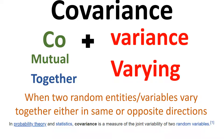Wikipedia says: in probability theory and statistics, covariance is a measure of the joint variability of two random variables. In short, covariance is used to find the relationship between two random variables.